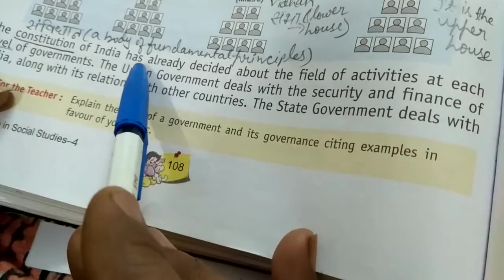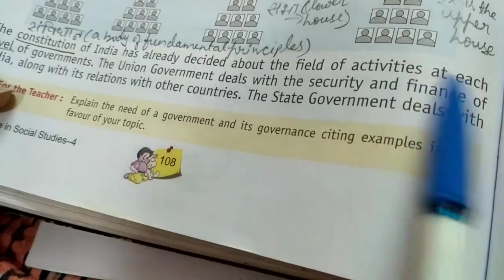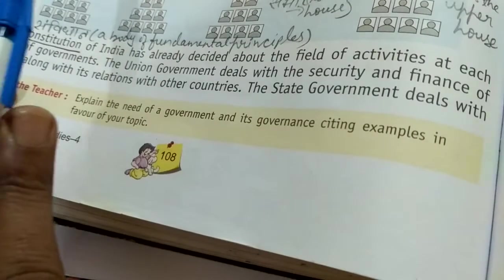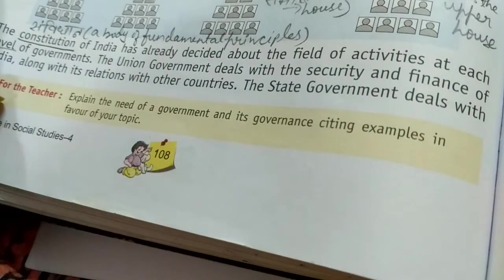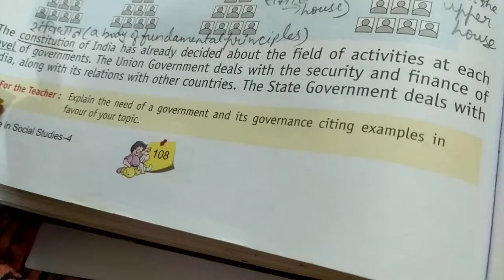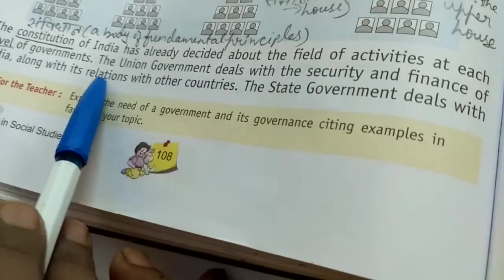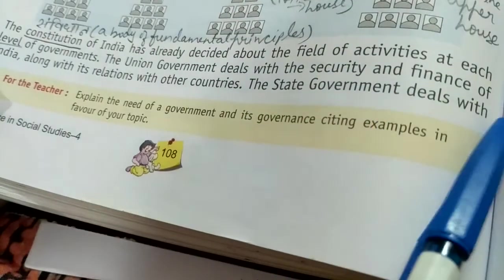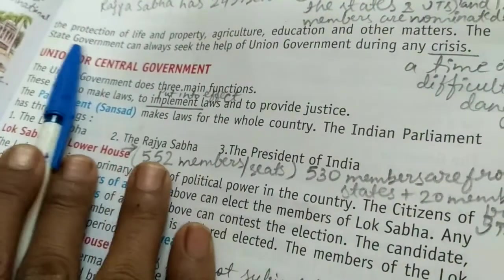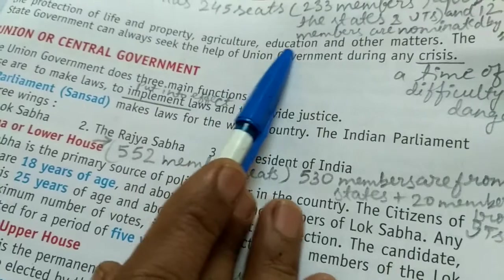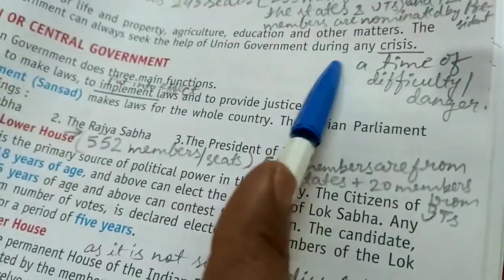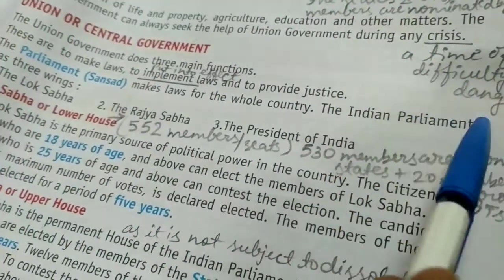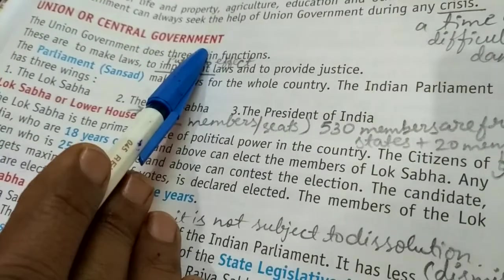The Constitution of India has already decided the field of activities at each level of government. We have two levels of government: central/union and state. The union government deals with the security and finance of India along with its relations with other countries. The state government deals with the protection of life and property, agriculture, education, and other matters. The state government can always seek the help of the union government during times of crisis or difficulty.